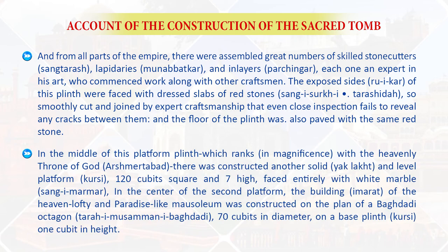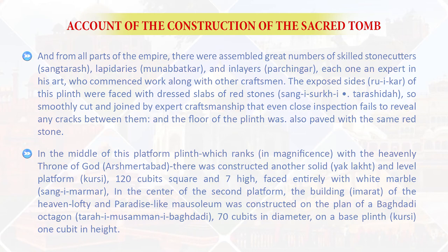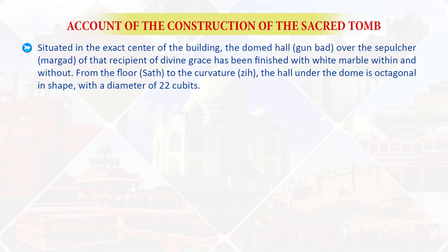In the middle of this platform — which ranks with the heavenly throne of God — another solid and level platform, 120 cubits square and 7 cubits high, faced entirely with white marble, was raised. In the center of the second platform, the building of the heaven-lofty and paradise-like mausoleum was constructed on the plan of a Baghdadi octagon, 70 cubits in diameter, on a base plinth one cubit in height. Situated in the exact center of the building, the domed hall over the grave of that recipient of divine grace has been finished with white marble within and without.